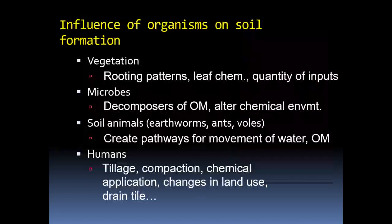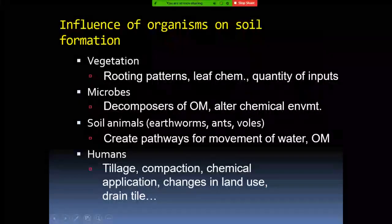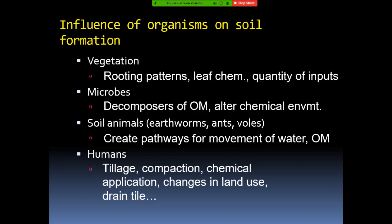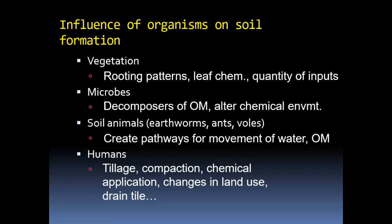We also have the second factor of soil formation, which is soil organisms. We have seen from previous slides how soil organisms act. We have vegetation, microbes, soil animals, and humans as part of them. They all work to decompose material, sometimes moving things from the upper part to the lower part of the soil, mixing things, helping with chemical reactions, and creating pathways through which water can pass. Human is the most influential organism acting on soil, simply because human action can be applied at a larger scale — through machines and inventions that can change the soil significantly.